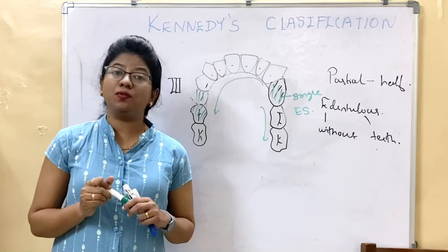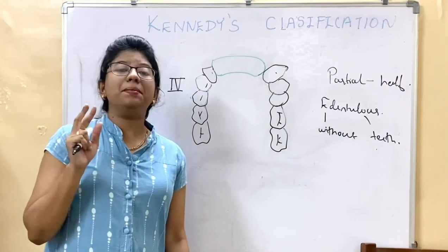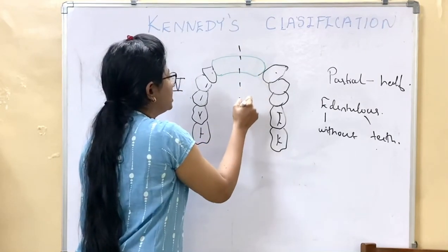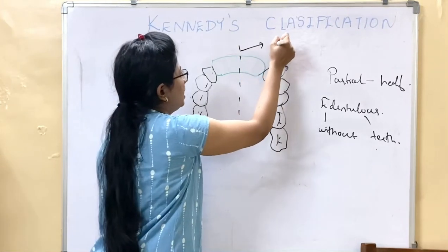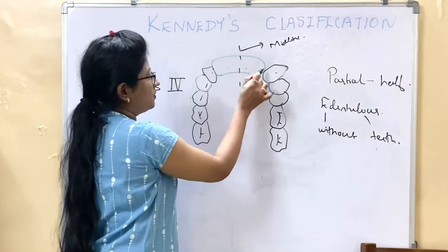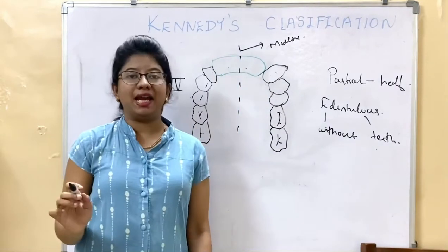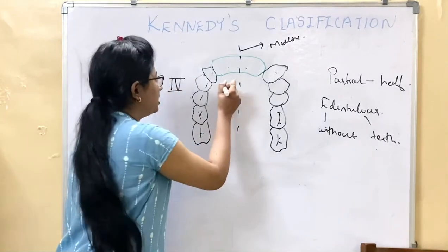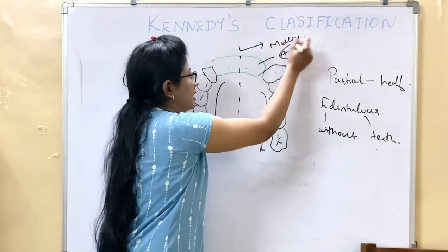Class 4 says there is a single edentulous area with bilateral spaces crossing the midline. You can see there are two spaces but the area is one. There is one area with two spaces which crosses the midline, and the teeth are present posterior to it — meaning the edentulous area is in the anterior region and teeth are in the posterior region.